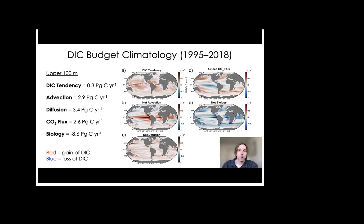So now that I've shown that ECCO-Darwin has skill in reproducing the observed ocean DIC state, I'm next going to focus on the climatological DIC budget results, which are vertically integrated in the upper 100 meters of the water column. In the panels shown here, A through E, the red colors show an increase or a gain of DIC and the blue colors show a decrease or a loss of DIC.